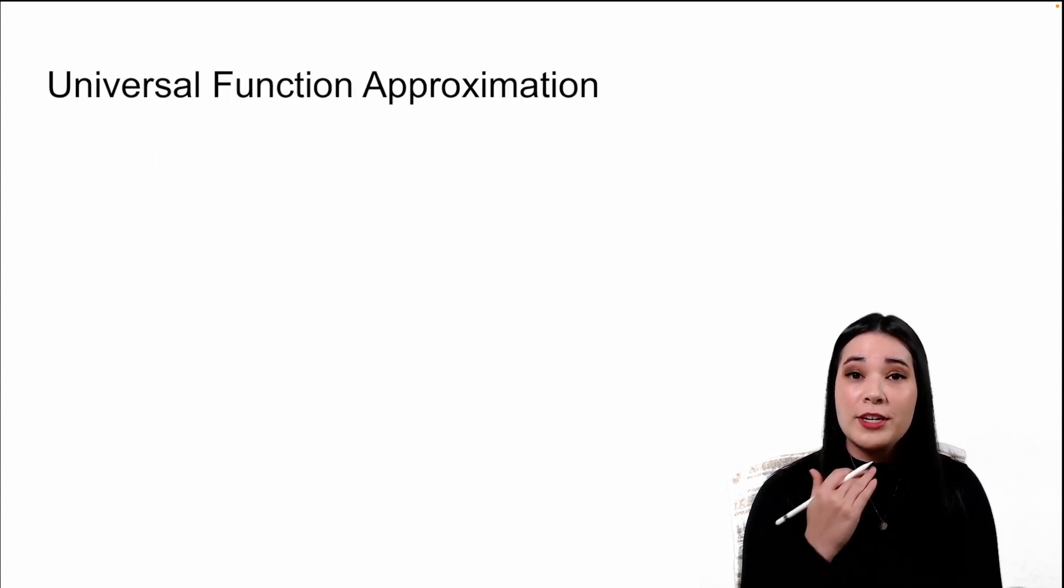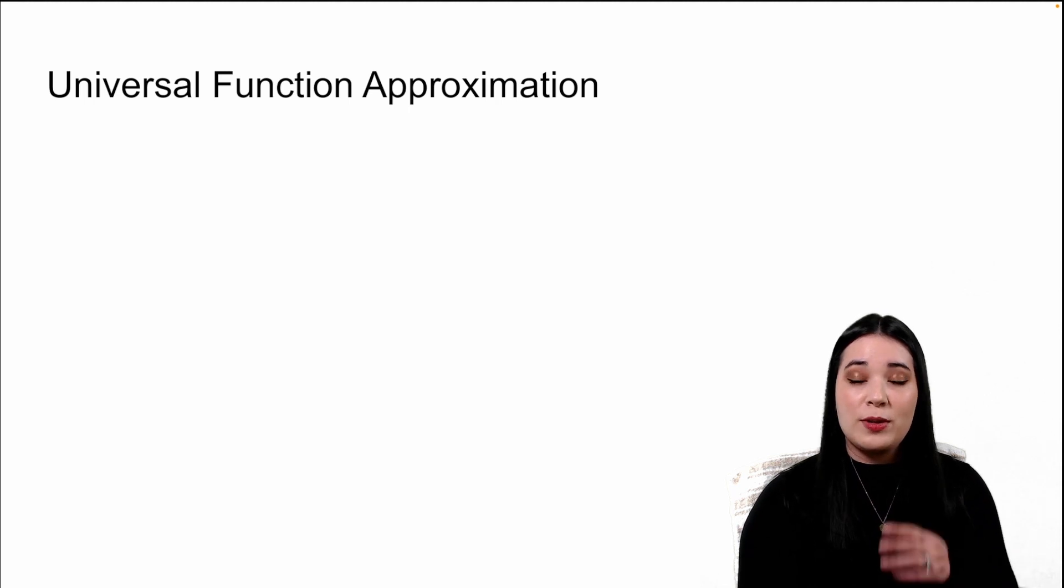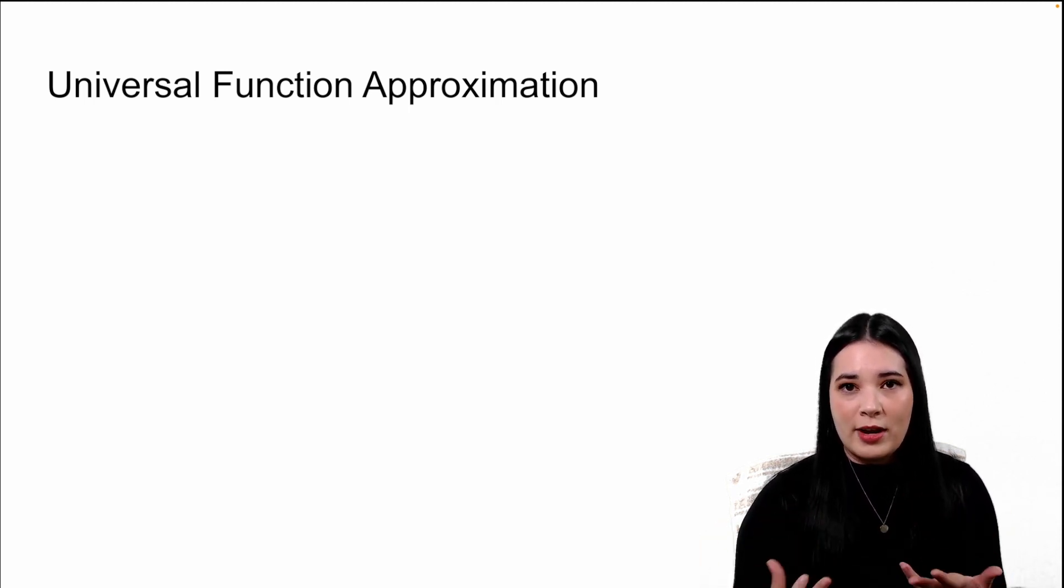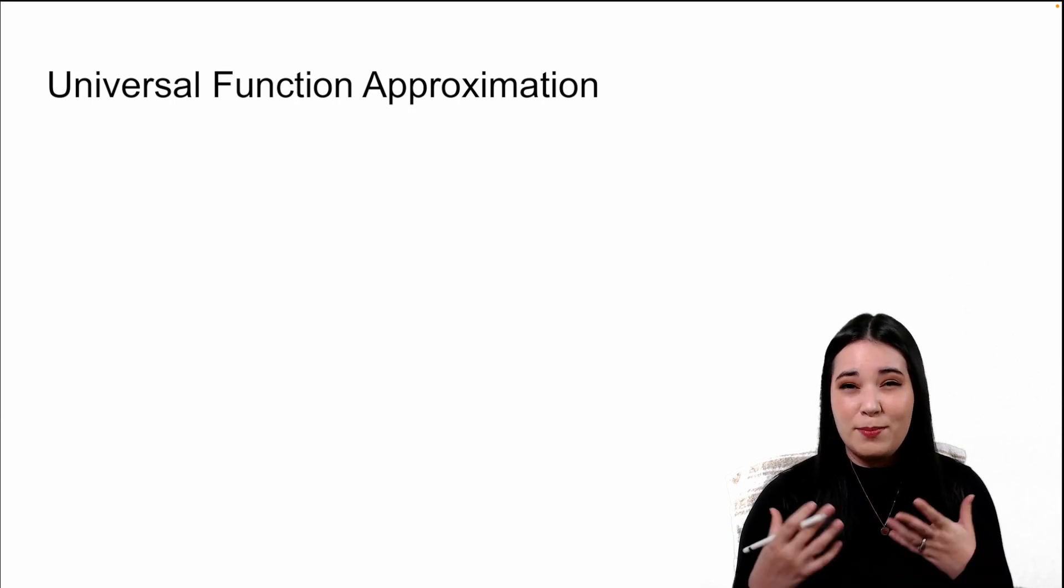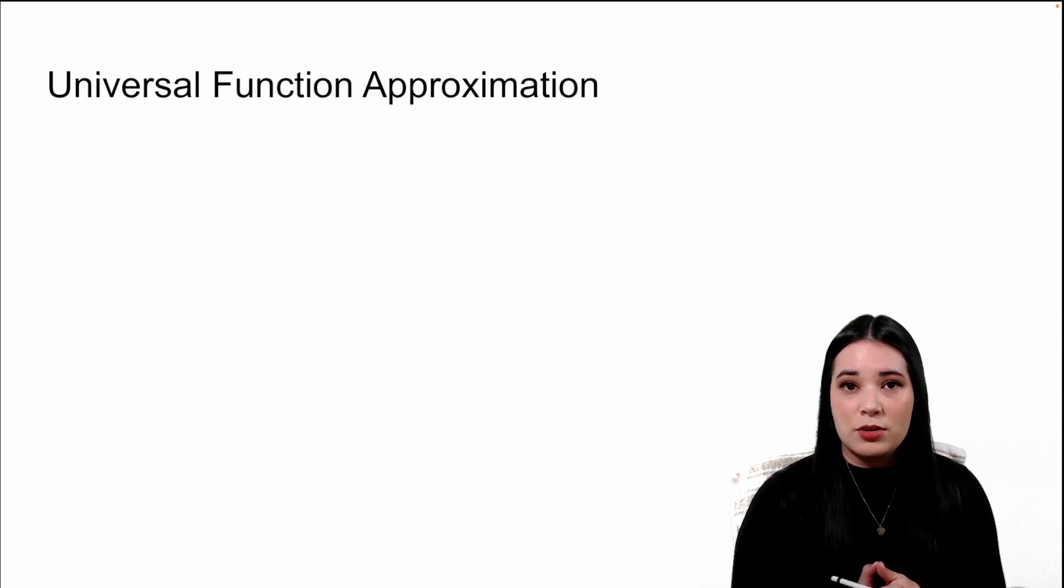Last, let's talk about universal function approximation. Universal function approximation basically means that no matter how complicated the relationship is between the inputs to your model and the output of your model, if your neural network is sufficiently complex enough, it can mimic or figure out what that relationship between inputs and outputs are. And this is why neural networks are so powerful and why we're basically going to spend a whole semester learning about them.